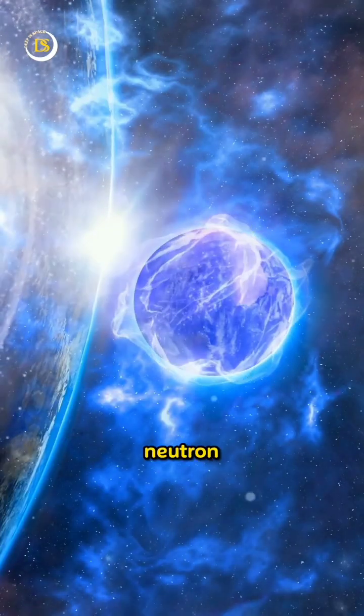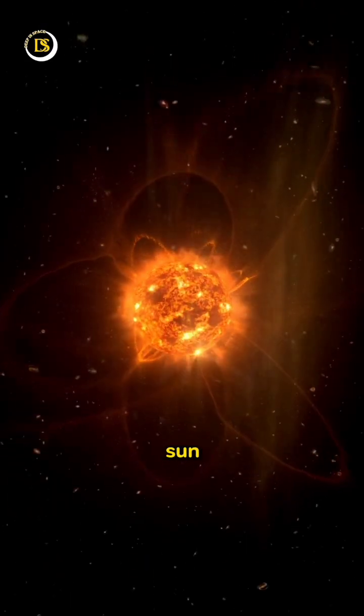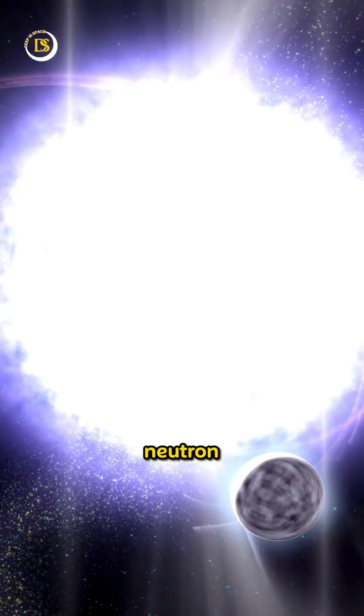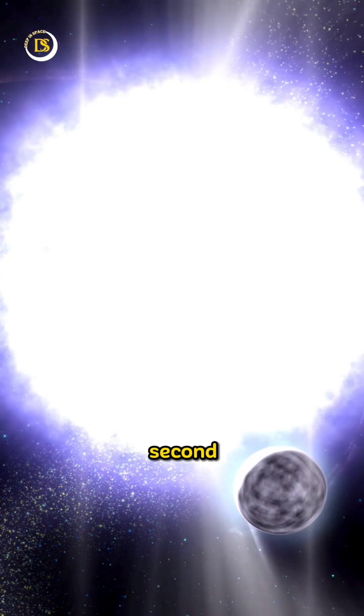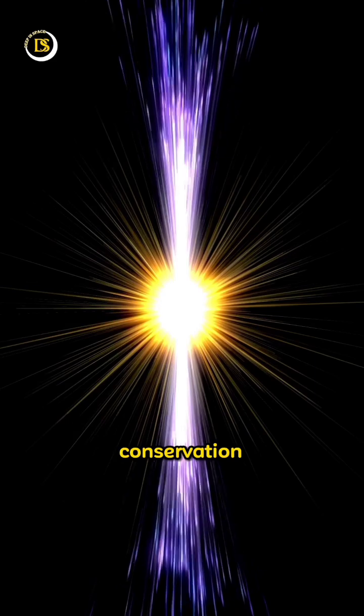Picture this: a neutron star is as small as a city but packs a mass twice that of our sun. What's even more mind-blowing is their speed - some neutron stars, known as millisecond pulsars, can spin a whopping 700 times per second, which is due to the principle of conservation of angular momentum.